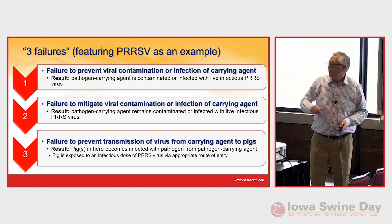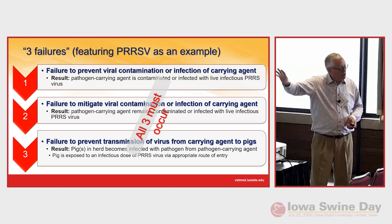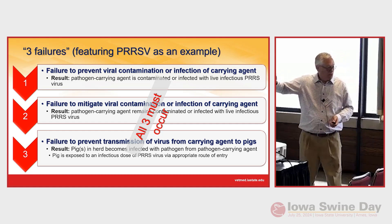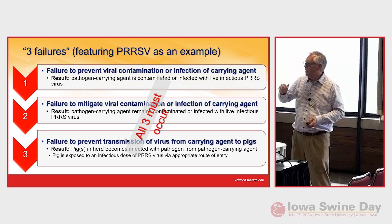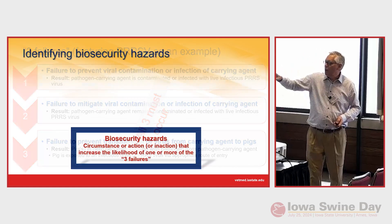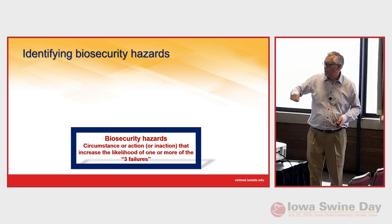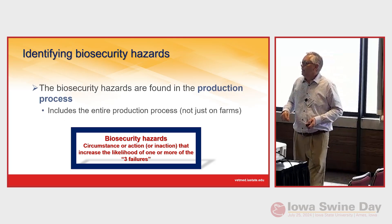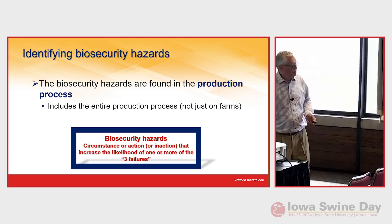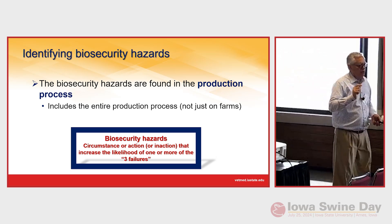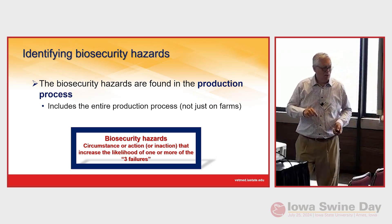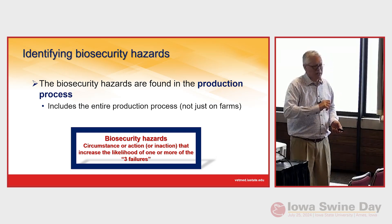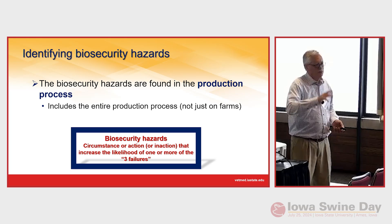With PRRS, one of the bad things is it can get in anywhere — every route of entry is possible — and in some cases it doesn't take a lot of virus. If all three failures happen, now you've got problems. The key is all three of these failures have to occur, and that works in our favor, because some of these are going to be pretty low-probability events. A biosecurity hazard is defined as a circumstance or action that increases the likelihood of any of those three failures.